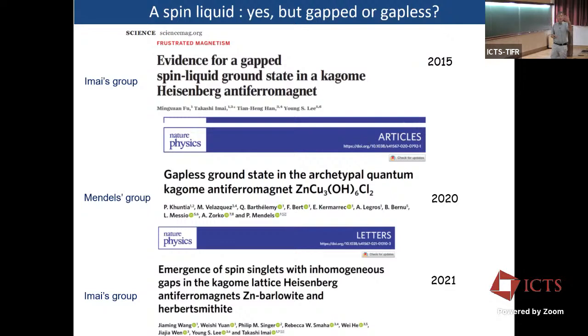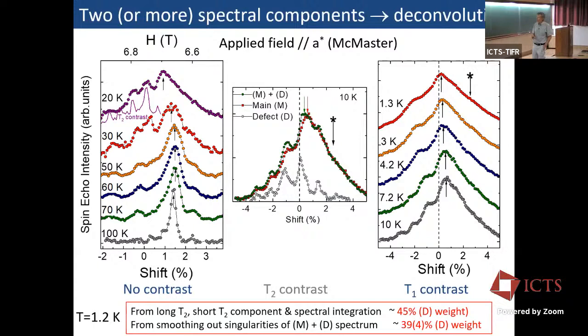So if you would have a distribution of J, you would have a distribution of this hyperfine coupling. So it would broaden the lines. The lines are so narrow that you can put an upper bound to this delta J over J, and which is much smaller than the 40 percent needed to stabilize a quantum spin liquid induced by disorder. So you can discard completely this scenario. So now, if I make a jump in the history of this compound, which has been around since 2006, I'm a bit bothered, I must say, because if you look at the titles of the papers, our papers included, and those are from Takashi Imai. There was one in 2015 evidence for a gap. Then we claim gapless ground state, and then evidence of spin singlets with homogeneous gaps.